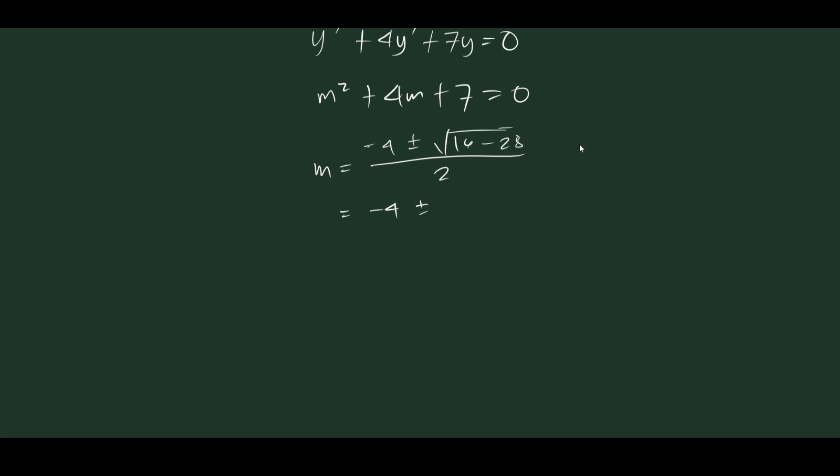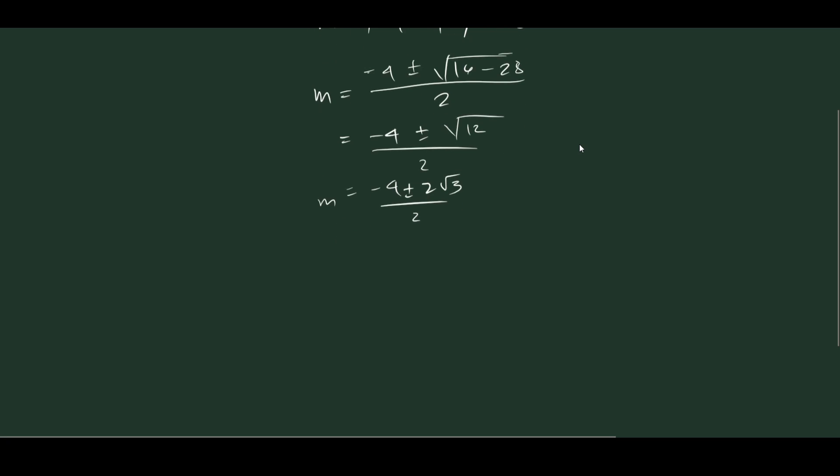So negative 4 plus minus square root of 12 all over 2. Negative 4 plus minus of 2 square root of 3 all over 2. Then we can simplify this further by cancelling out the 2.